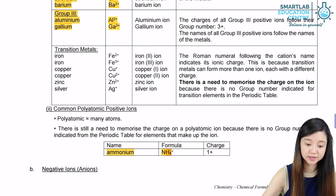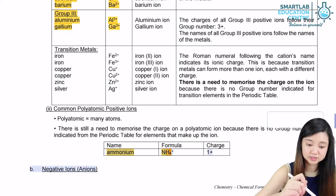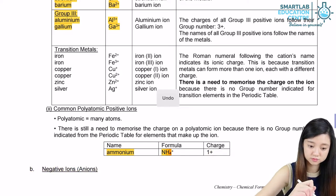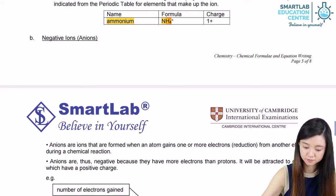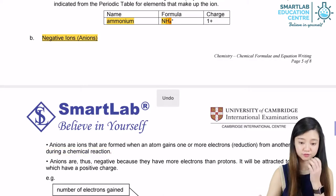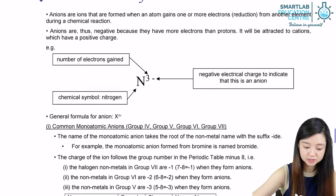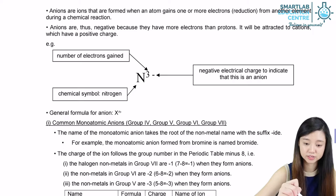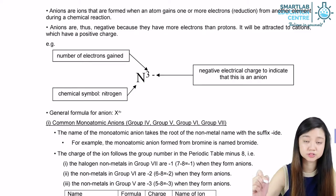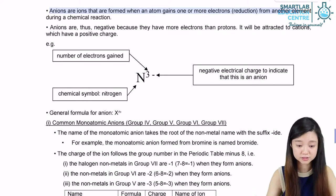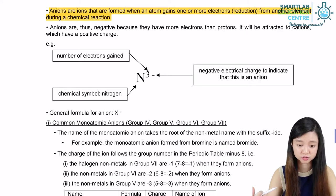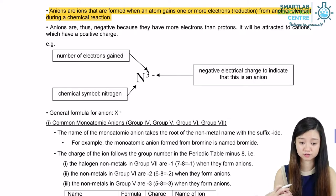Let us look at the negative ions, or anions. Anions are formed when the atom gains one or more electrons from another element during a chemical reaction. They are usually formed from non-metal atoms, because only non-metal atoms tend to gain electrons to achieve a stable electronic configuration.